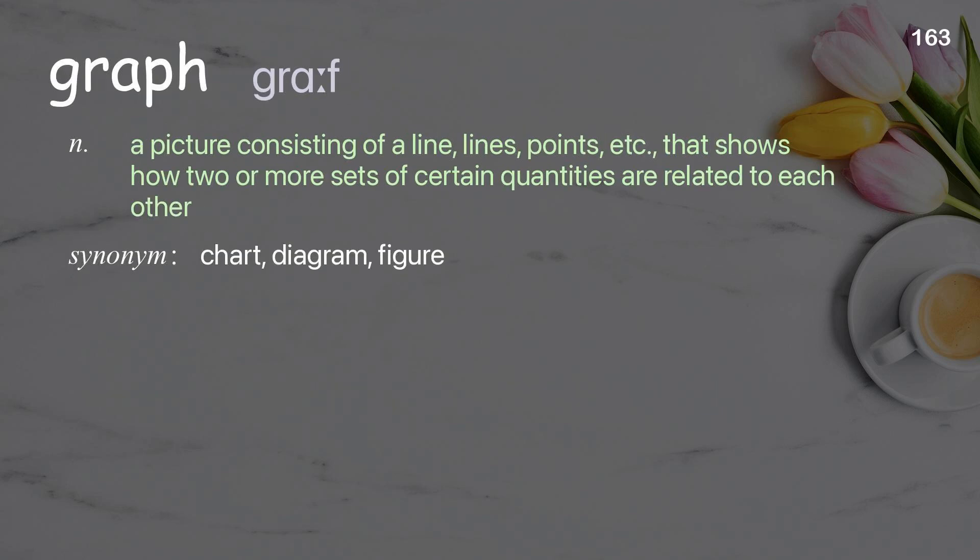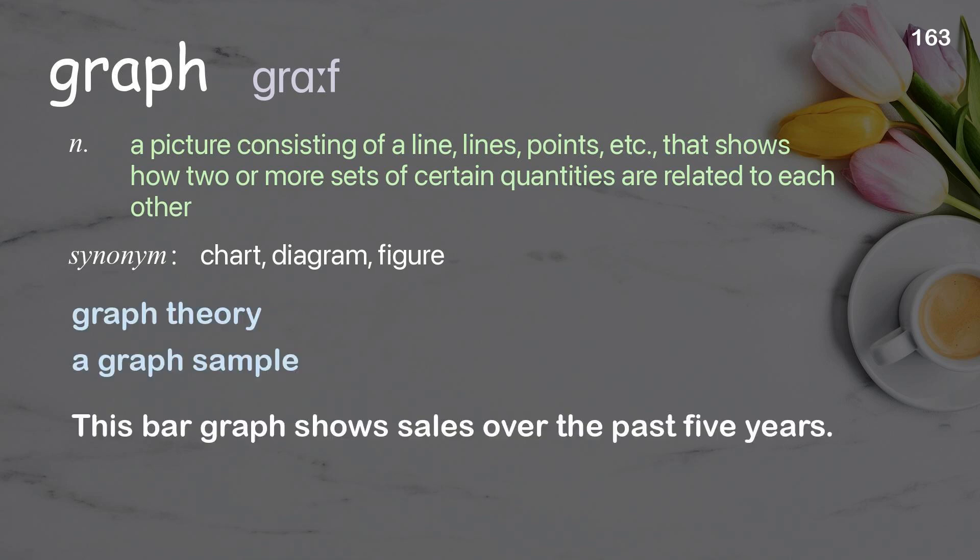Graph: a picture consisting of a line, lines, points, etc. that shows how two or more sets of certain quantities are related to each other. Examples: graph theory, a graph sample. This bar graph shows sales over the past five years.